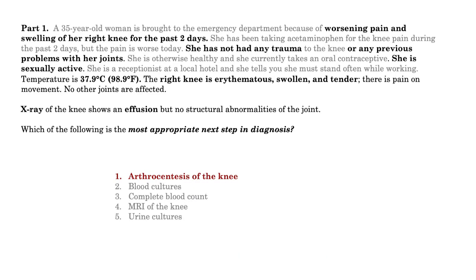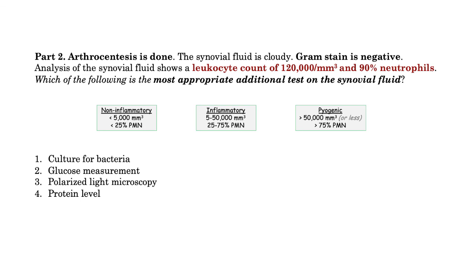Look at the answer choices — arthrocentesis sits front and center. That brings us to part two of the question, where they offer the results of the synovial fluid analysis. They want you to be able to interpret synovial fluid studies. She has 120,000 leukocytes, which is impressive. But of equal diagnostic importance is the differential of those cells — 90% neutrophils. That's a big number.